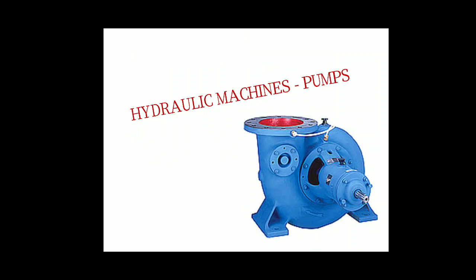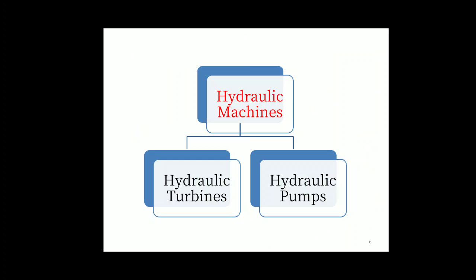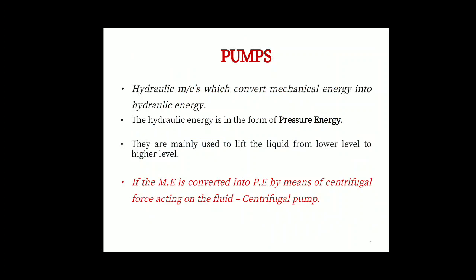Now let us see the different types of pumps. Broadly, hydraulic machines can be divided into two types: turbines and pumps. So what is a pump? Hydraulic machines which convert mechanical energy into hydraulic energy. The hydraulic energy is in the form of pressure energy. If the mechanical energy is converted into pressure energy by means of centrifugal force acting on the fluid, it is called centrifugal pumps. The main root cause of the motion of the centrifugal pump is centrifugal force.